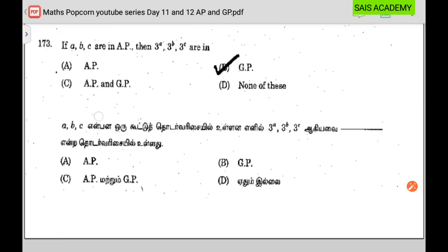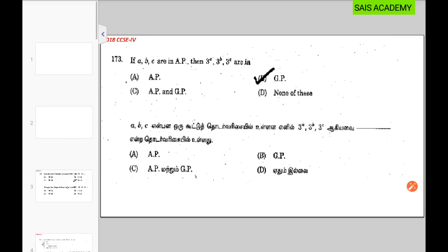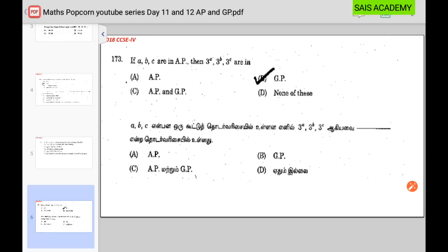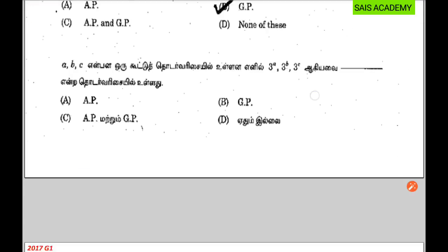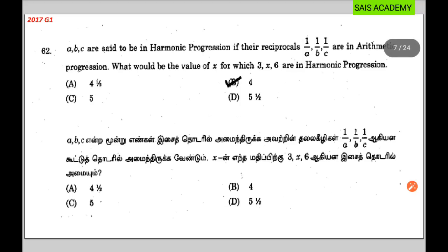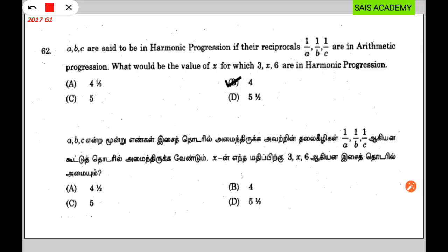Let's look at this. Now, A, B, C — 3 is 5th. 4 is 5th. That is H.P. Alright. Now, this 3 is 5th. Now A, B, C — 5 is 5th, 5 is 5th.